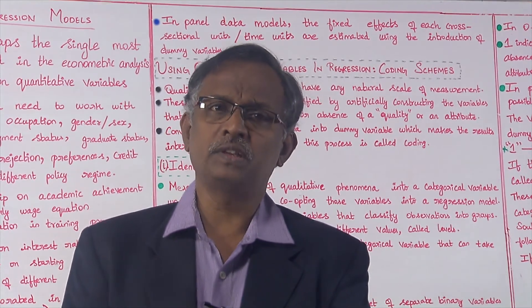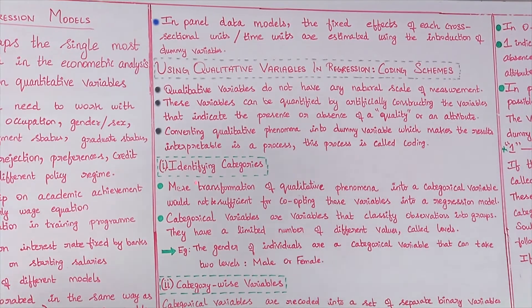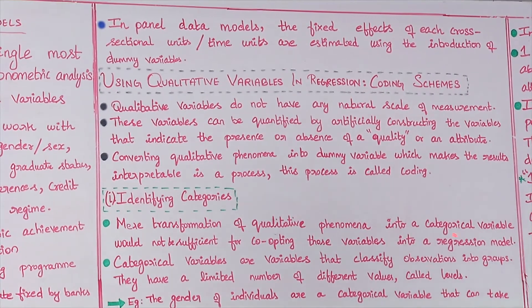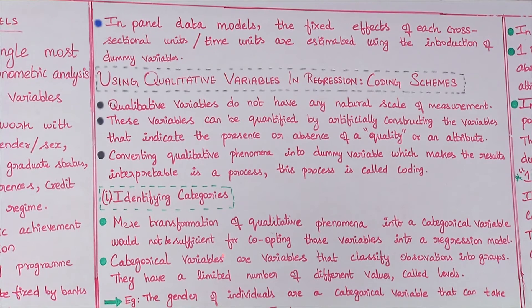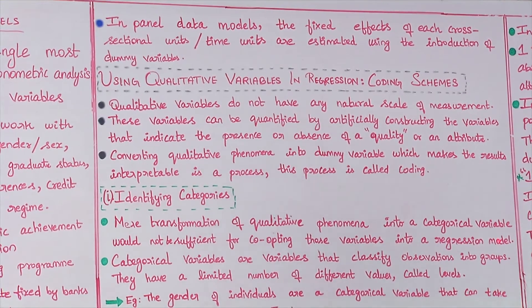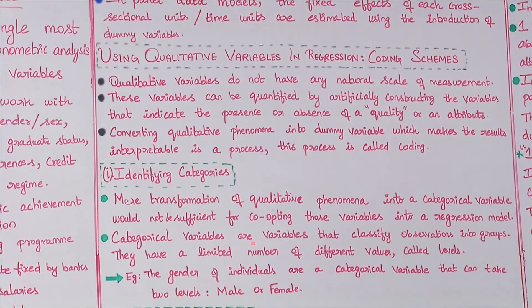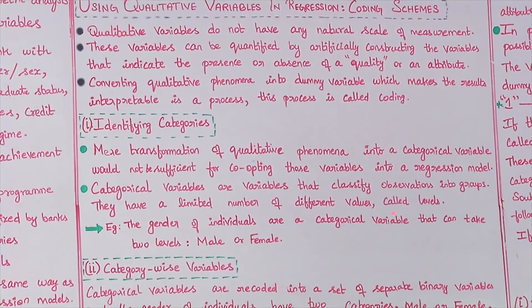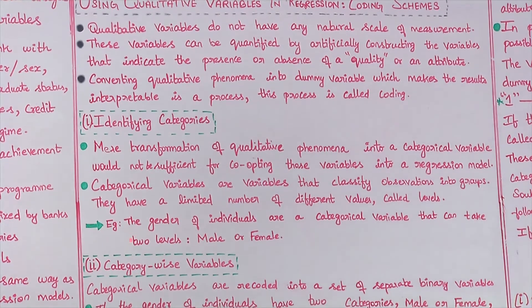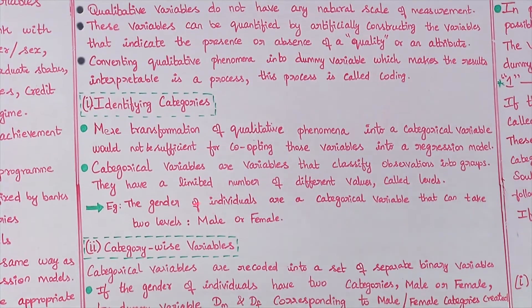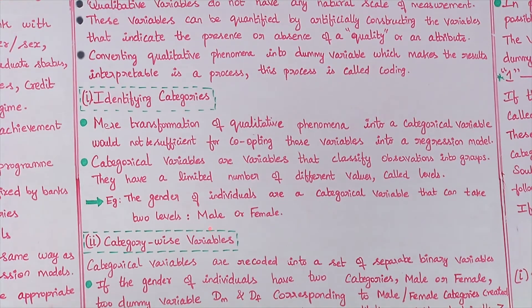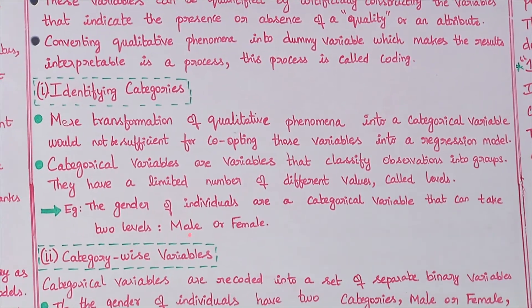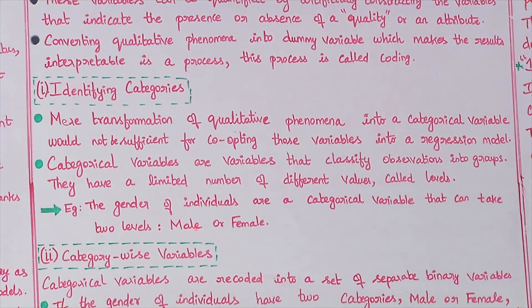Coding a qualitative variable involves three steps. The first step is identifying categories. Mere transformation of qualitative phenomena into a categorical variable would not be sufficient for incorporating these variables into a regression model. Categorical variables are variables that classify observations into groups. They have a limited number of different values called levels. For example, gender is a qualitative variable — it has two categories or levels: male or female. Identifying the categories is the important first step in the coding scheme.